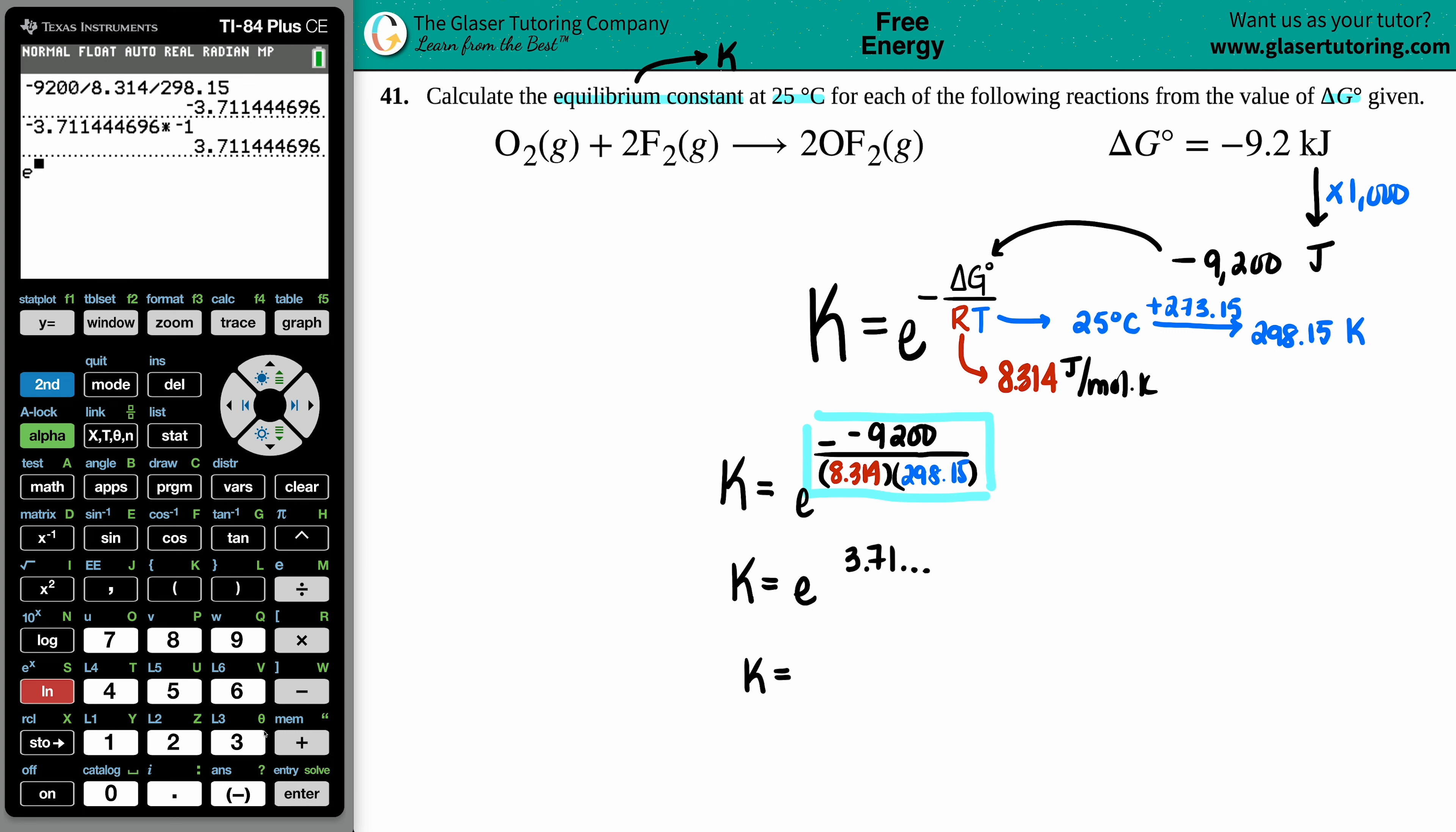So now I'm just going to say second ln, there's the e, and now I'm going to take that number, the positive value. And there you go, your equilibrium constant is 40.9128, yada yada.